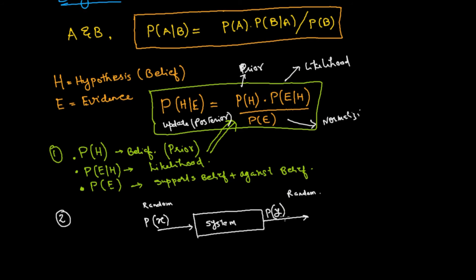If you assume that the input is Gaussian in nature and the output is also Gaussian in nature, then a Gaussian distribution is defined by two parameters: mu and sigma, the mean and the variance. We are not going into that at this moment because we are associating this with the pure Bayesian philosophy. So this is the input, this is the output, and I am attaching probability distributions to both.